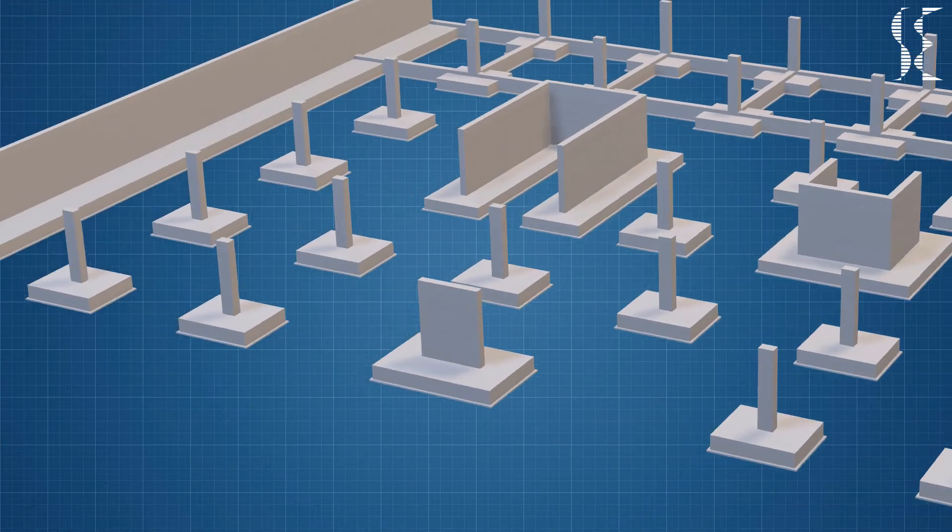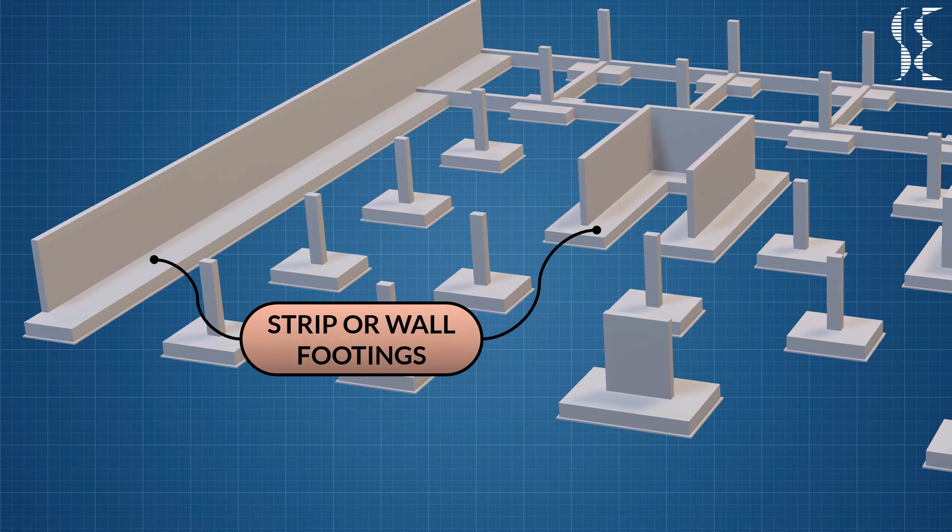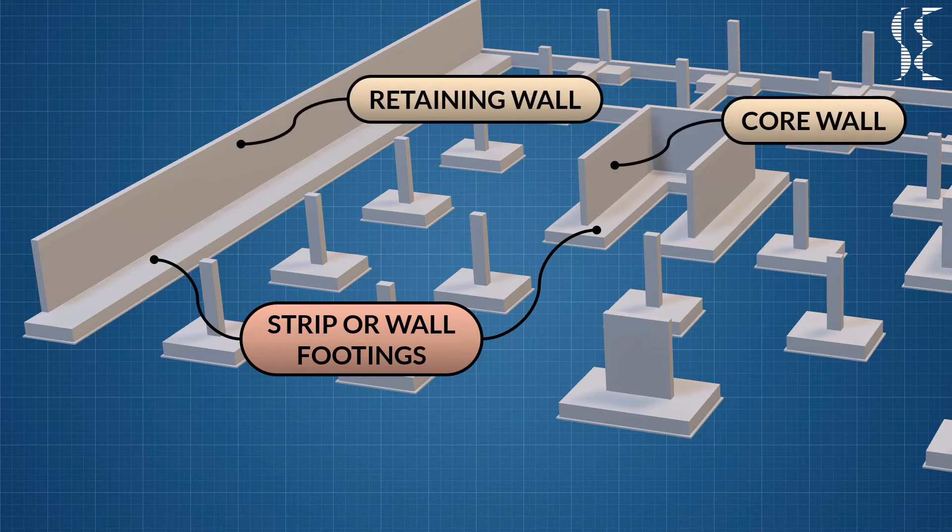Next is strip or wall foundations which are long strips specially for reinforced concrete walls or load bearing masonry walls. The concrete walls on strip footings can be retaining walls, basement walls or core walls.